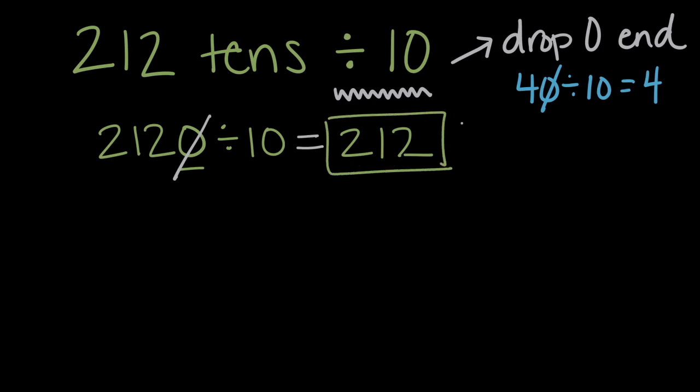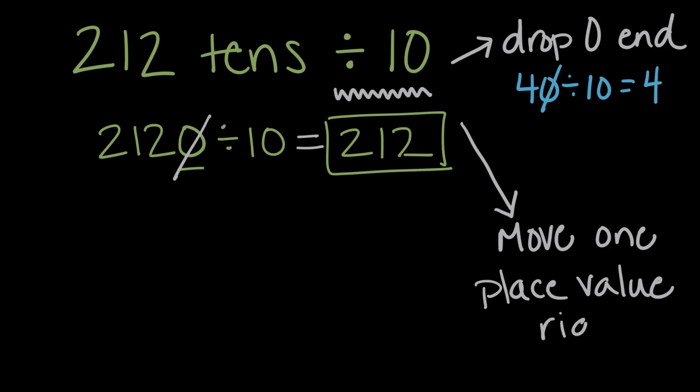But we could also use the place value pattern. We could think in terms of place value. And instead of moving one place value to the left, one place value larger, we're gonna move one place value smaller or to the right. One place value to the right.